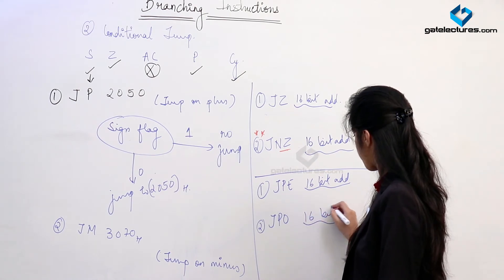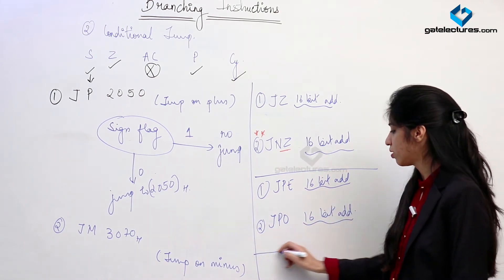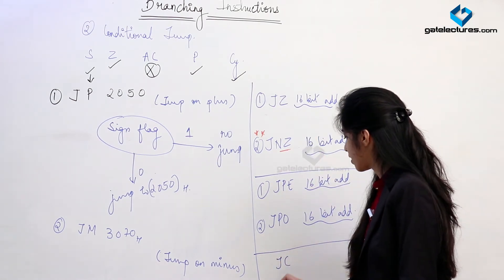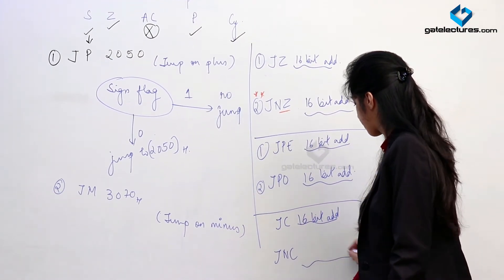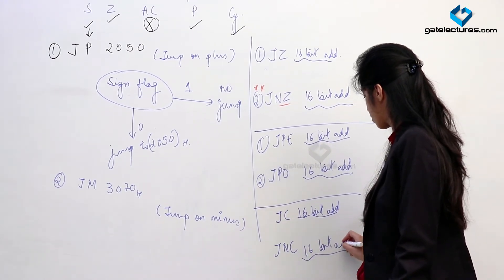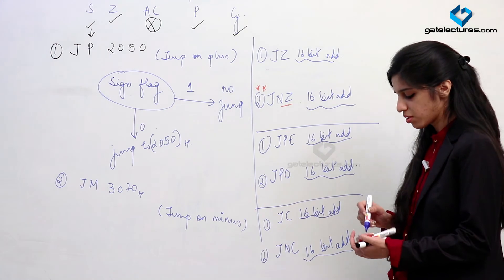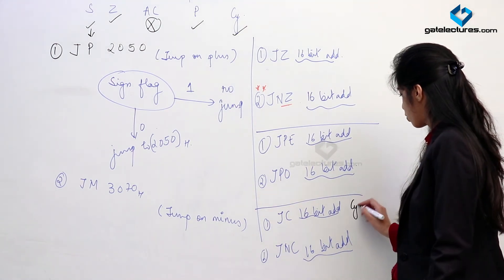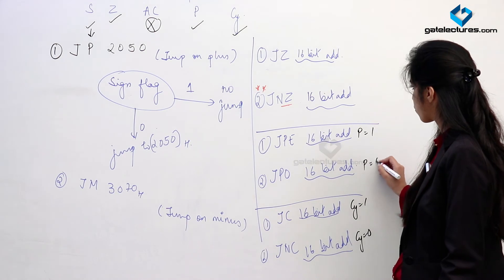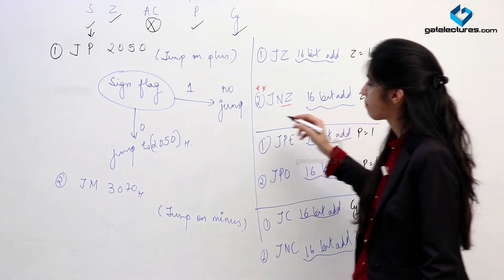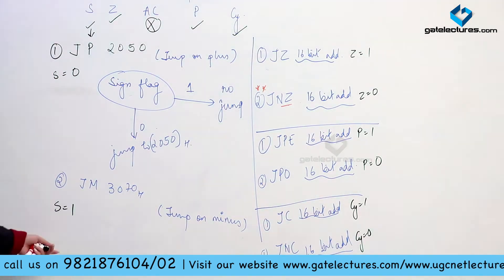If parity is even, you make a jump to the required address. If parity is odd, you jump to the required address. Based on the carry flag we have JC (jump on carry) and JNC (jump on non-carry). For JC, jump happens when carry flag is 1. For JNC, jump happens when carry flag is 0. To summarize the flag conditions: carry flag 1 or 0, parity flag 1 or 0, zero flag 1 or 0, sign flag 0 (plus) or 1 (minus). This is how conditional jump works.